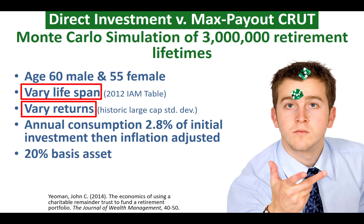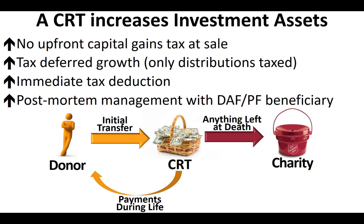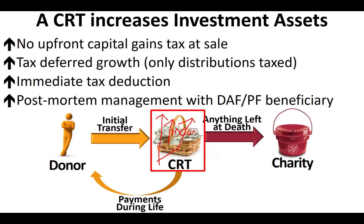The comparisons were: a maximum payout charitable remainder unitrust — one that gives the minimum 10% present value to charity — versus a direct investment. With a 20% basis asset, that means the person paid $20 a share for stock now worth $100. The assumption is the person consumes 2.8% of the total initial investment, inflation-adjusted, each year. So if it's a $10 million business, they consume 2.8% of $10 million annually. If assets are in a regular account and you have big gains, you get hit with taxation immediately. But because the CRT is a tax-free account, you keep earning on the full amount before taxes come out.